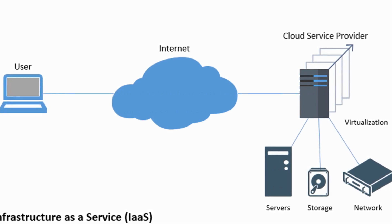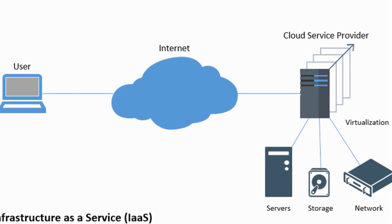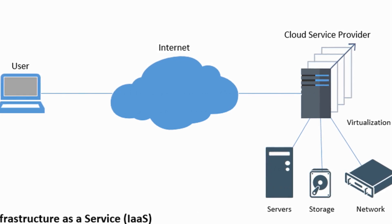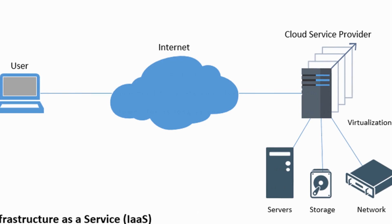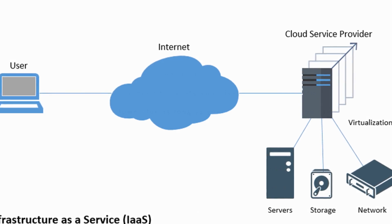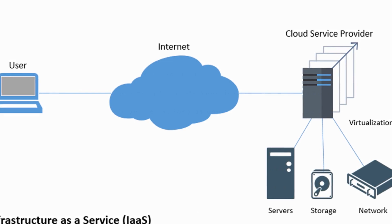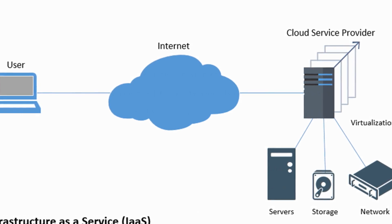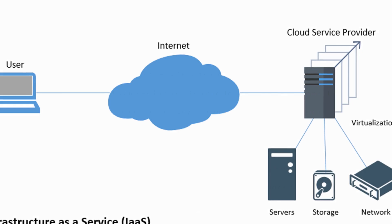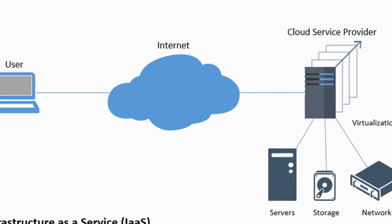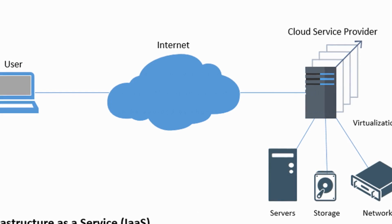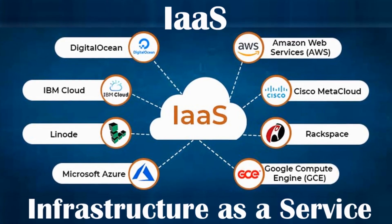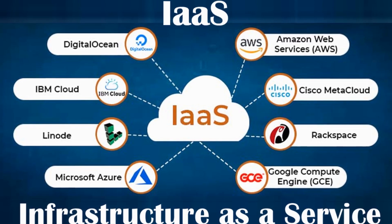One way to use IaaS would be as a quick, flexible way to build up and take down development and testing environments. You can use only the infrastructure you need, scale it up or down for as long as you need it, and then stop when you are finished, paying only for what you use. The main drawbacks to IaaS are the possibilities of provider security issues, multi-tenant systems, and service reliability. These drawbacks can be avoided by choosing a reliable provider. Public cloud providers such as AWS, Microsoft Azure and Google Cloud are examples of IaaS.